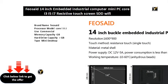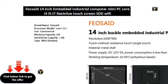Brand name: Fezide. Processor model: Core III J. Use: commercial. Memory capacity: GB. Hard drive capacity: GB. Type: mini desktop. Model number: FNSKKYTJ. Processor main frequency: GHz. Processor brand: Intel. Graphics card type: integrated card. Type: mini PC, SSD GB.